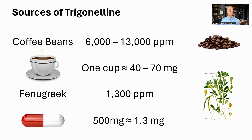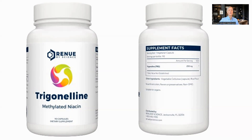There are capsules with fenugreek, and a common size I saw was 500 milligrams. My calculation based on a paper about trigonelline yields in fenugreek seeds is that this would contain about 1.3 milligrams. Neither of these will be close to the 500 milligrams used in the one human trial I could find. In my previous video I also looked at converting from the mouse trials to human doses.